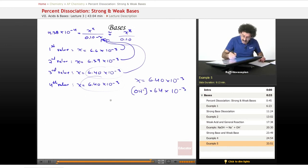And the pOH, which is the negative log of the 6.4 times 10 to the negative 3, gives me 2.19. And then pH is equal to 14 minus pOH. I end up with 11.8. That is my basic solution.